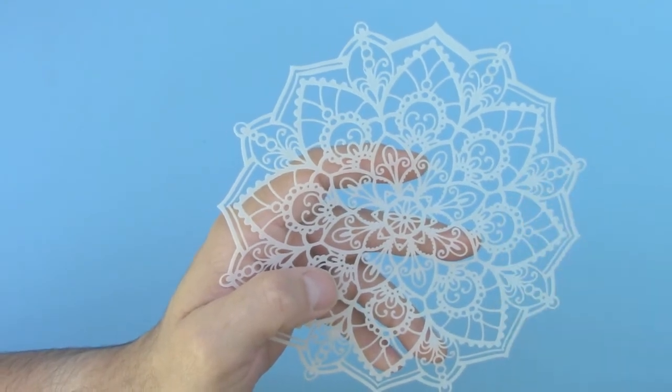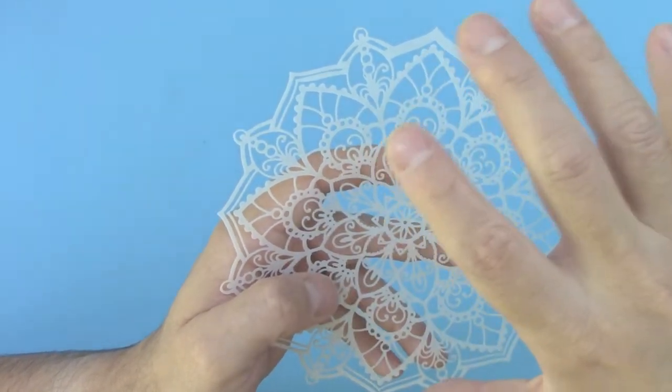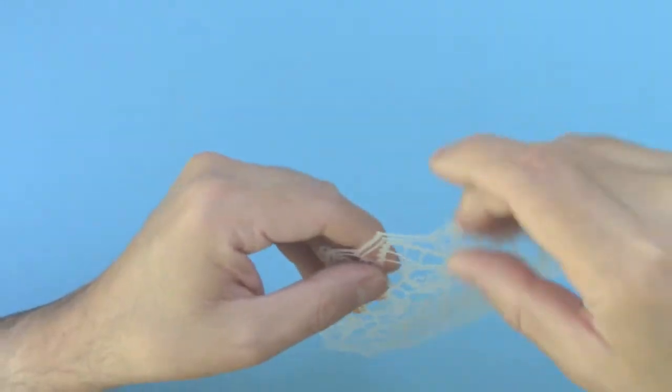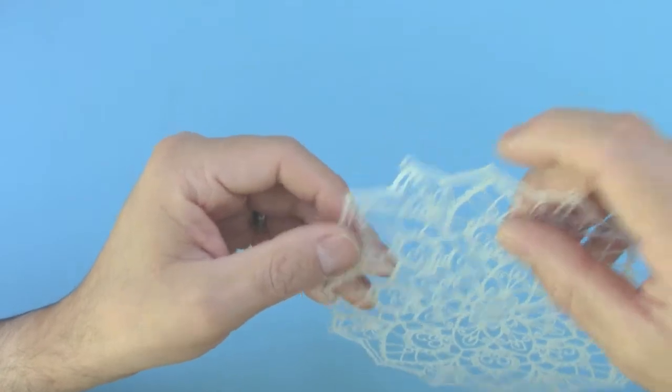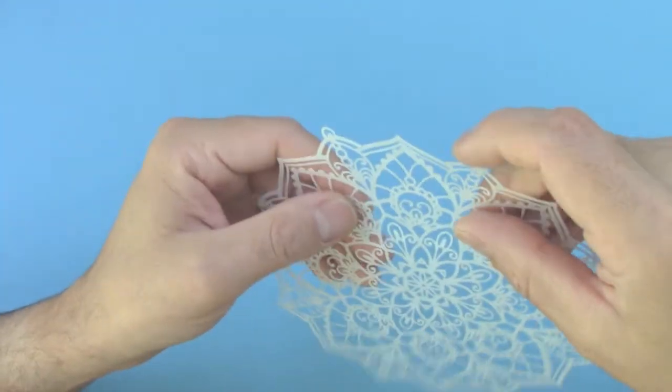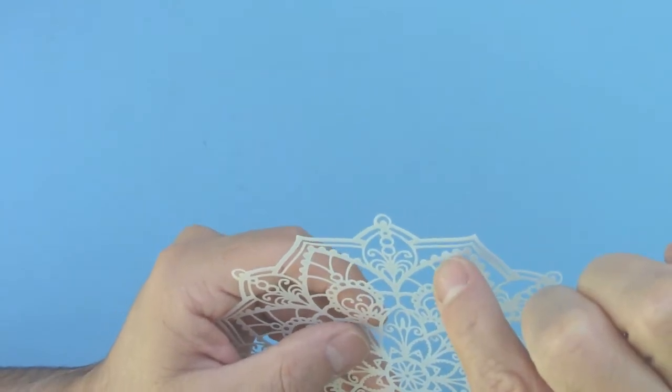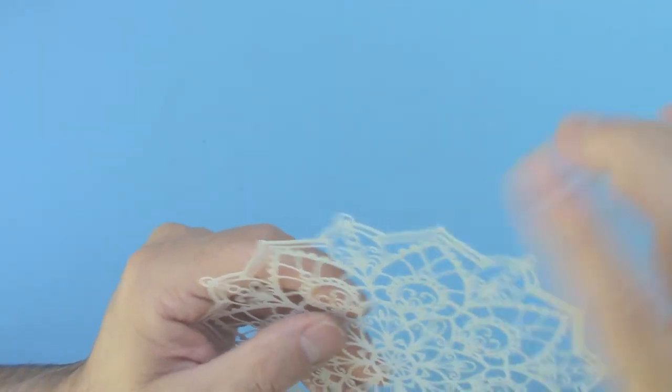All the materials I tested are very resistant to tearing, so you can design very thin lines without worrying about breaking. In this case, this stencil has lines that are 0.7 millimeters thick, which is pretty thin.